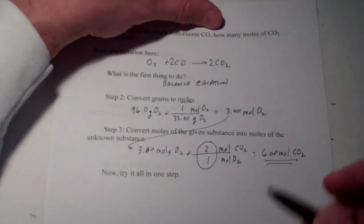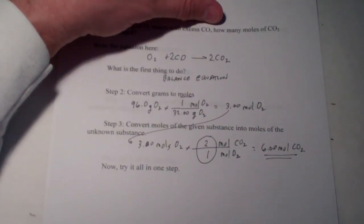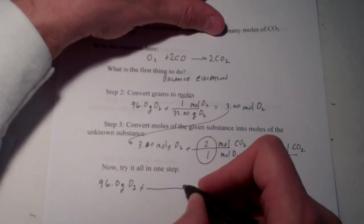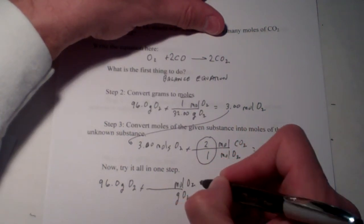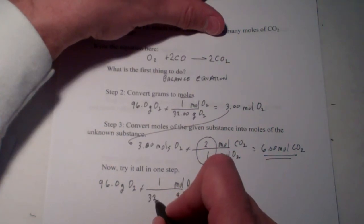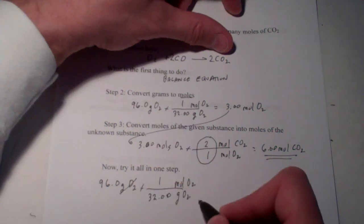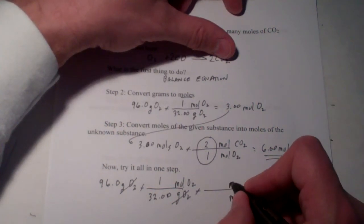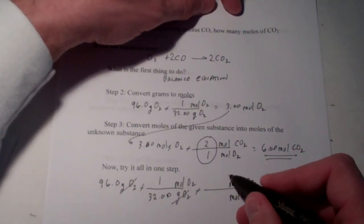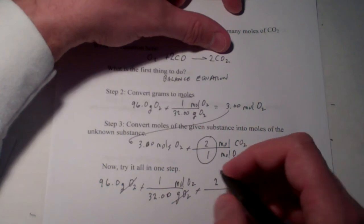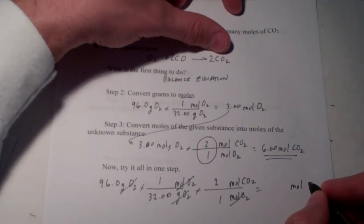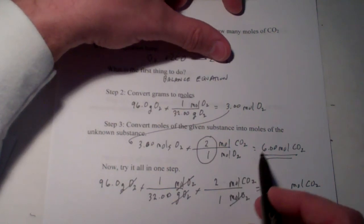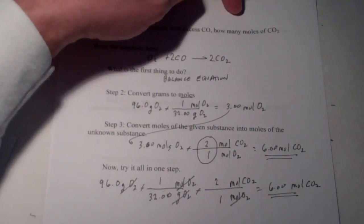Now, we can do that in one expression. Instead of doing it in separate steps, we can do it in one step. We'll start with what we know. 96 grams of O2. We will go from grams of O2 to moles of O2. 1 mole of O2, 32.00 grams. And then, we'll add another step here, another conversion factor to take us from moles of O2 to moles of CO2. Remember, that ratio comes from the balanced equation. 1 oxygen and 2 CO2s. The unit is moles of CO2. We have 96 divided by 32, which is 3, times 2, which gives us 6.00. The same answer.